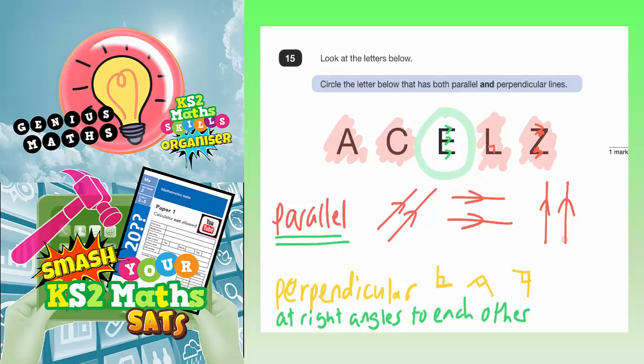So the only letter that has both parallel and perpendicular lines is letter E. You can see the parallel lines marked off, with a blue dot in each corner where the right angles are. That's why letter E has perpendicular lines.